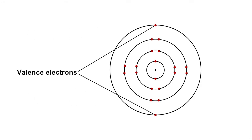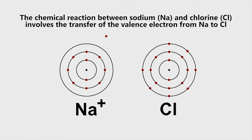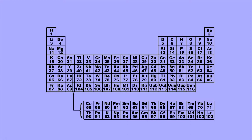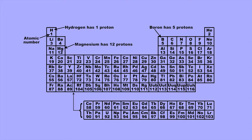The number of electrons in the outermost shell, called the valence electrons, is of particular interest because these are the electrons that are involved in chemical reactions between elements. The position of an element in the periodic table gives its atomic number, which tells you the number of protons in the nucleus of an atom of the element. And because an electrically neutral atom has the same number of electrons as protons, it also tells you the number of electrons in the atom.